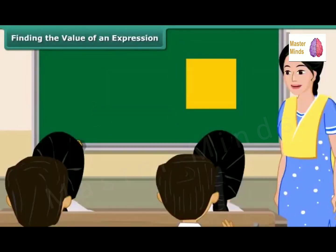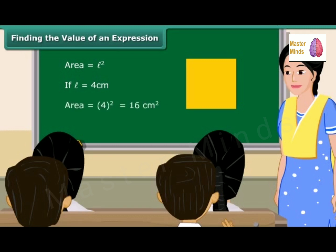Consider this square which has an area equal to L². If the value of L is 4 cm, then the area of the square would be 16 cm². There are a number of situations in which we need to find the value of an expression.